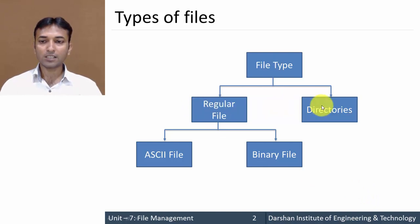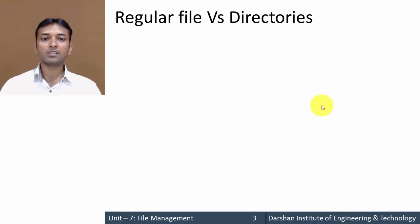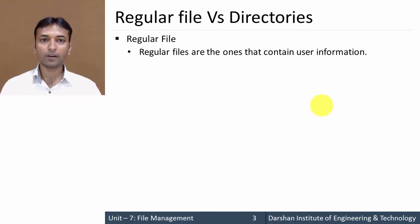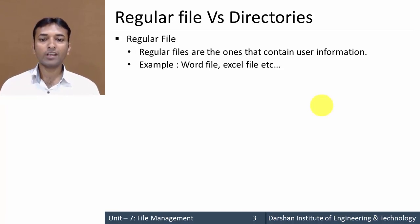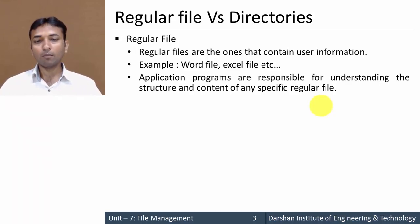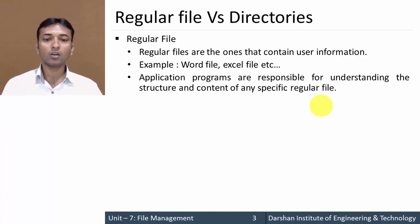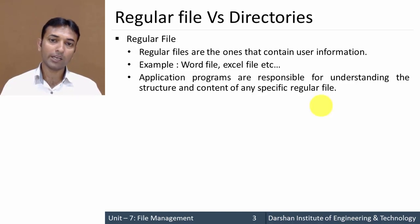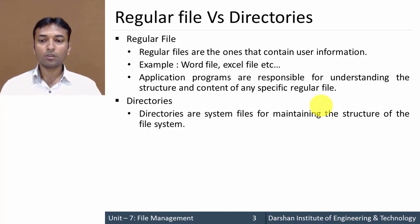First we will compare regular file versus directory file. A regular file is a file that contains user information — for example, a Word file, a Notepad file, or an Excel file. These files are used to store information of the user. The application program or user is responsible for understanding the structure and content of any specific regular file.